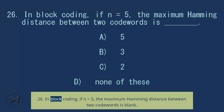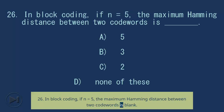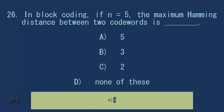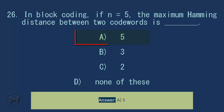Question 26: In block coding, if n equals 5, the maximum Hamming distance between two code words is blank. A) 5, B) 3, C) 2, D) none of these. Answer: A, 5.